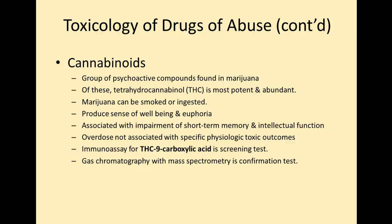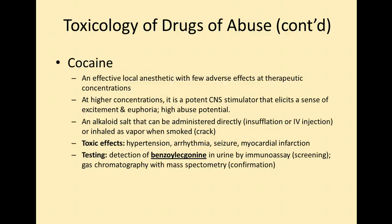The next classification is cannabinoids — a group of psychoactive compounds found in marijuana, commonly called tetrahydrocannabinol or THC, specifically THC-9-carboxylic acid. It produces a sense of well-being and euphoria associated with impairment of short-term memory and intellectual function. Overdose is not associated with a physiologic toxic outcome — it's hard to overdose on that one. We use immunoassay with gas chromatography mass spectrometry for confirmation.